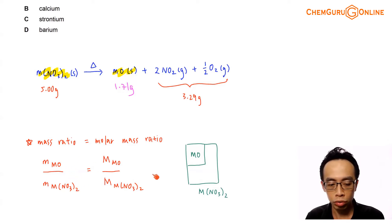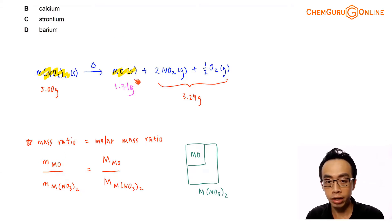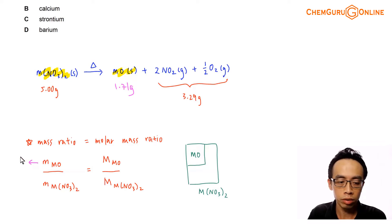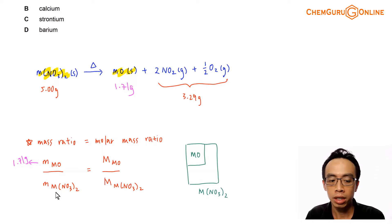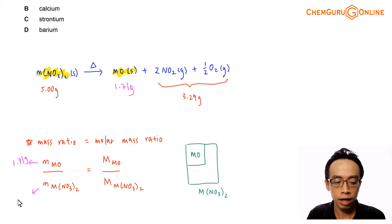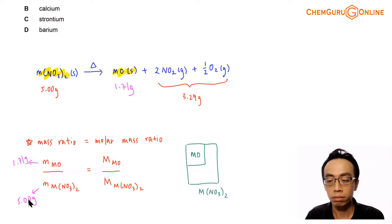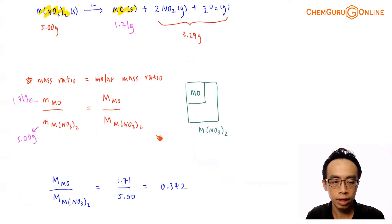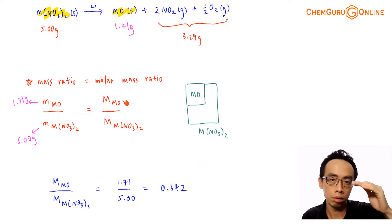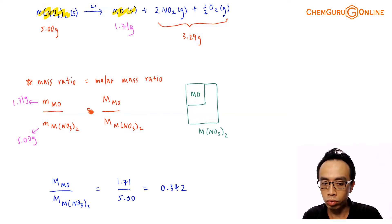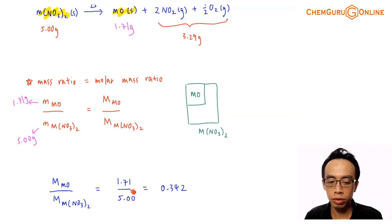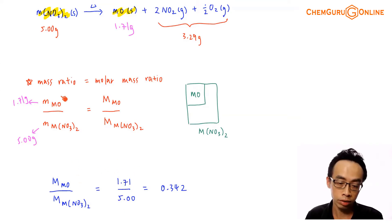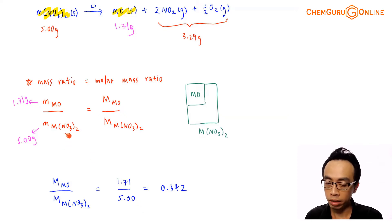The molar mass ratio of metal oxide to metal nitrate equals the mass ratio of metal oxide to metal nitrate. Substituting the values: the mass of metal oxide is 1.71g and the mass of metal nitrate is 5.00g, giving us the value 0.342. So the molar mass ratio for oxide to nitrate is 0.342.